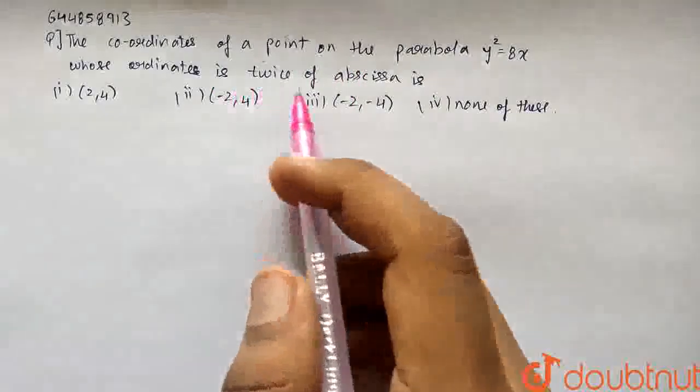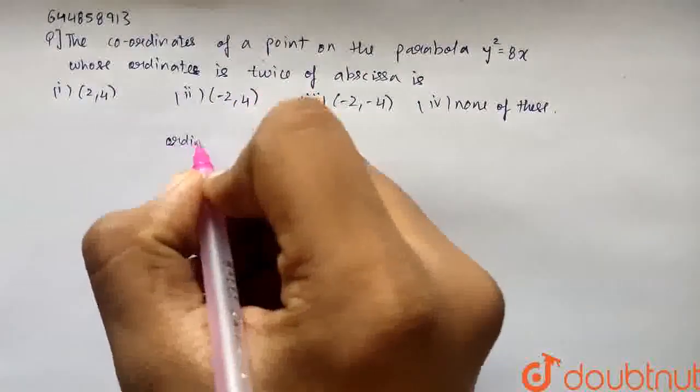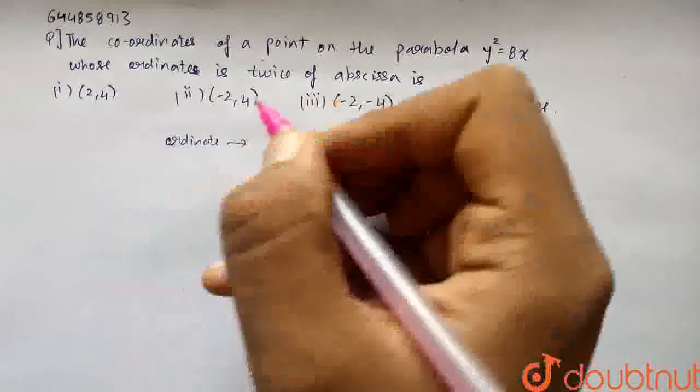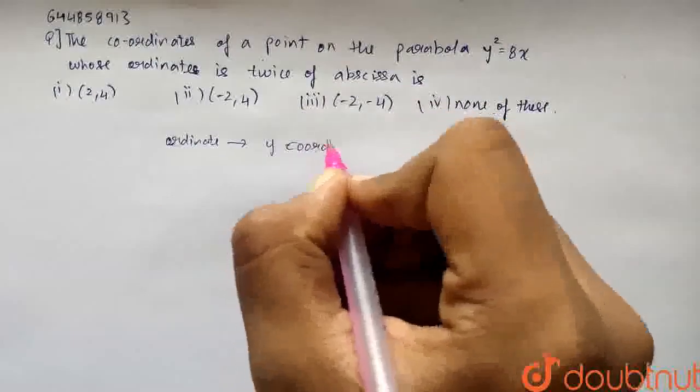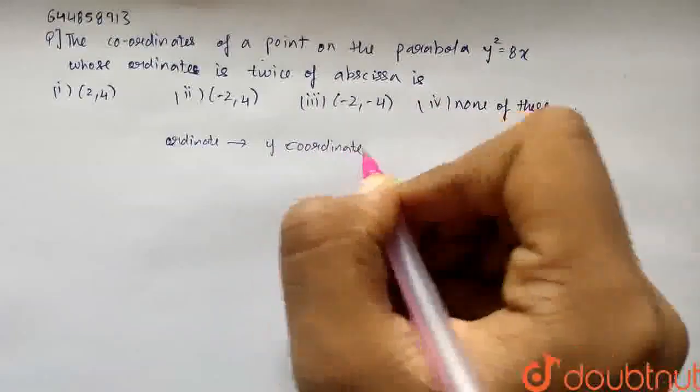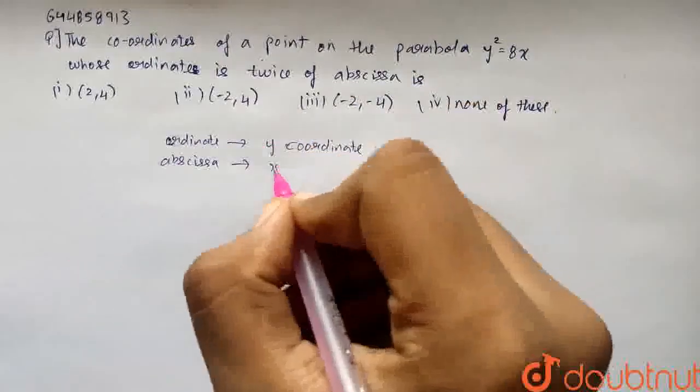The ordinate is twice of abscissa. So, ordinate is the y coordinate and abscissa is the x coordinate.